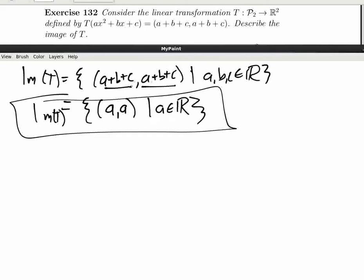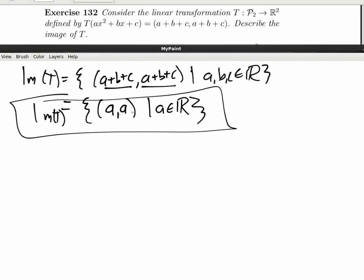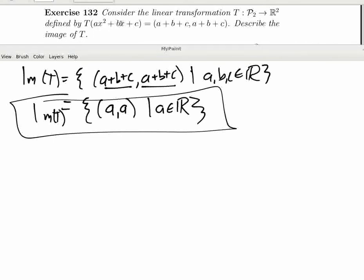And you can see this pretty easily. Definitely, any output, the two components will be equal. Also, you can get any pair like this by just having a x squared plus zero x plus zero, which is going to give you a, a for any a.